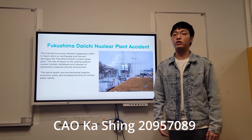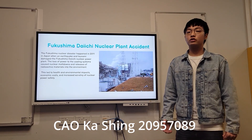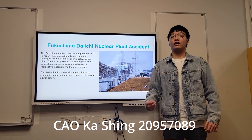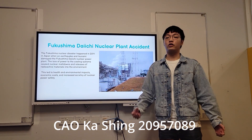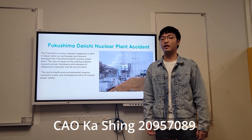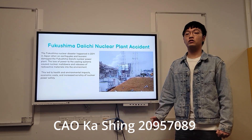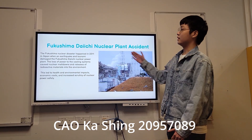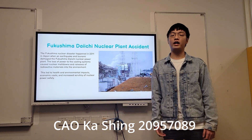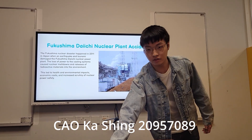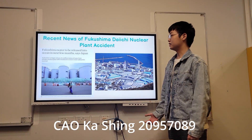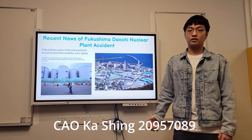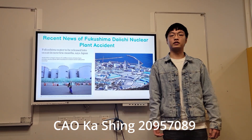As many of you may recall, on March 11, 2011, in Japan, they experienced a catastrophic earthquake and tsunami that caused widespread destruction and loss of life. Among many consequences of this disaster was the meltdown of several reactors in the Fukushima Daiichi nuclear power plant. In recent news, Japan has confirmed that it will release millions of tons of wastewater into the sea.